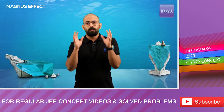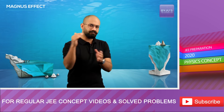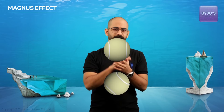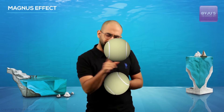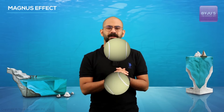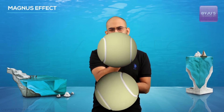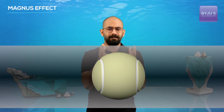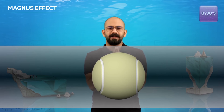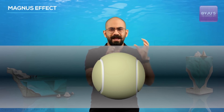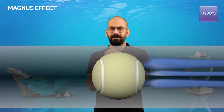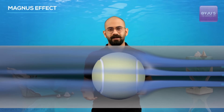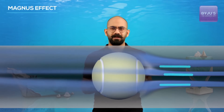Consider two balls moving through air in this direction. One is not spinning, and the other one is spinning. Now, come to the frame of the balls and look at the ball that's not spinning. Because we are in the frame of the ball, the air will be moving in this direction. But the pressure on either side will be the same because the speed of the air will be the same.